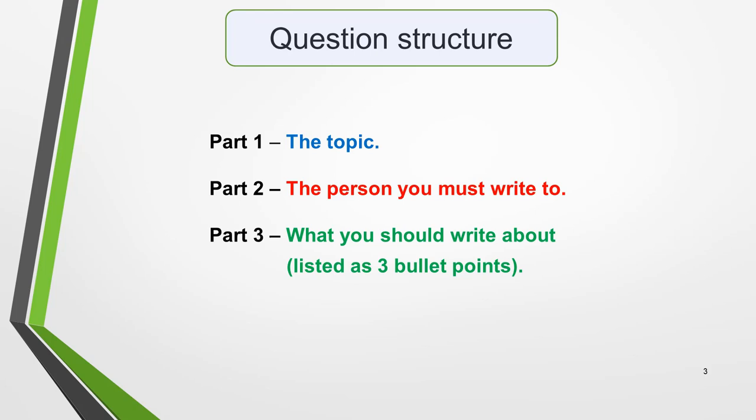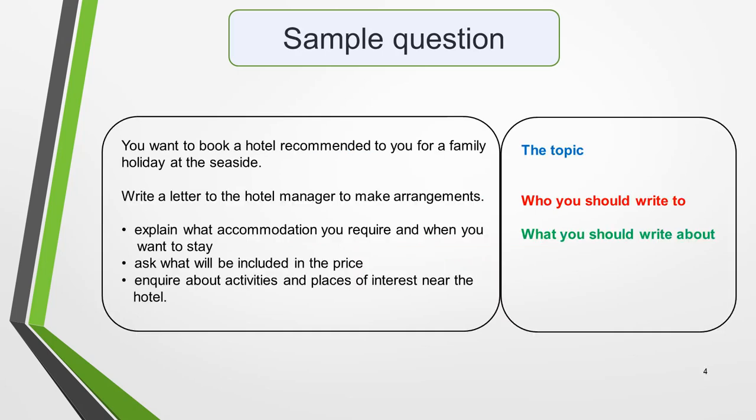First, the structure of the question. All questions for IELTS letters have the same structure. They are made up of three parts. Part 1 is the topic, Part 2 the person you must write to, and Part 3 what you should write about, which is listed as three bullet points. Here's a sample question for a letter to make an arrangement, with the three parts illustrated. I'll read the question for you first.